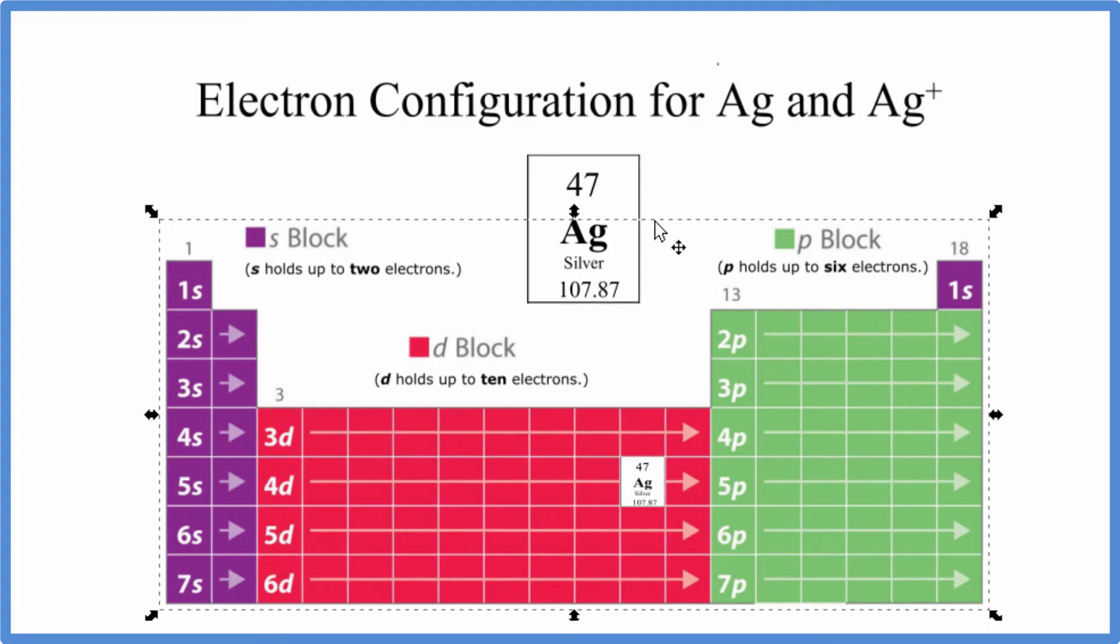Silver on the periodic table has an atomic number of 47. All these elements are neutral, that means the number of protons and electrons will be the same. 47 is the atomic number, that's the number of protons, so we have 47 electrons for the neutral silver atom.